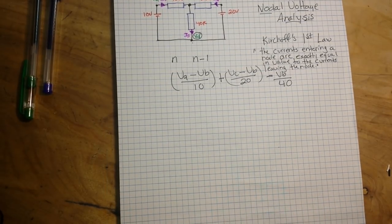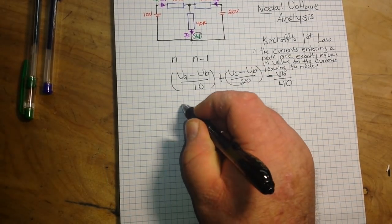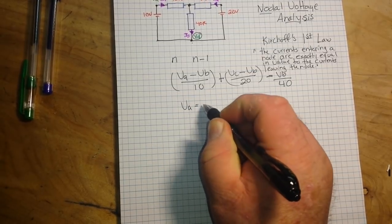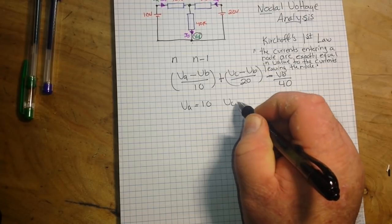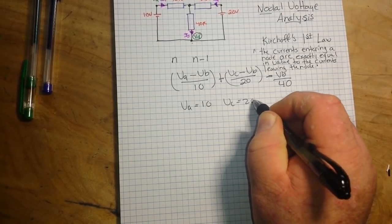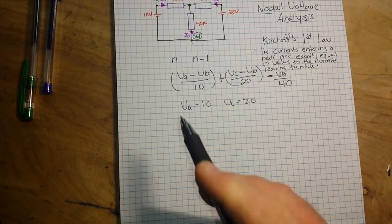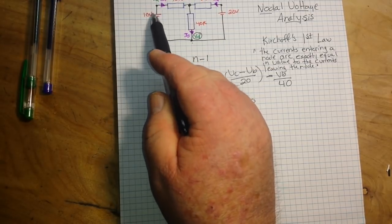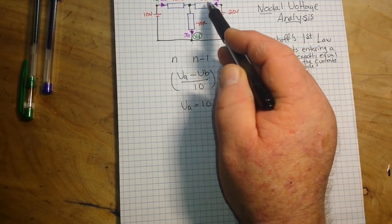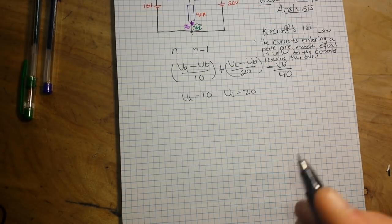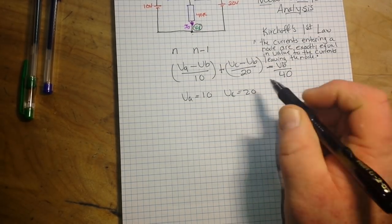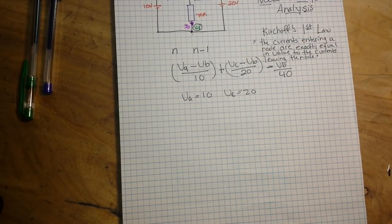So once we know that, we can say VA equals 10 and VC equals 20. Right? VA equals 10, VB equals 20. Now we can find—I'm sorry, VC equals 20. Now we can find VB.